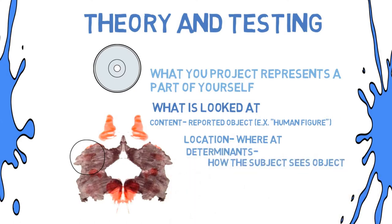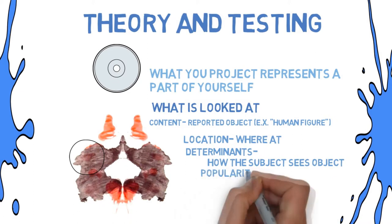Then there is another category labeled determinants, which includes form, color, movement, and shading. The last category is popularity, or how common the response is between test takers. After looking at these categories, as well as how the subject responded dispositionally, the psychoanalyst will interpret the results.